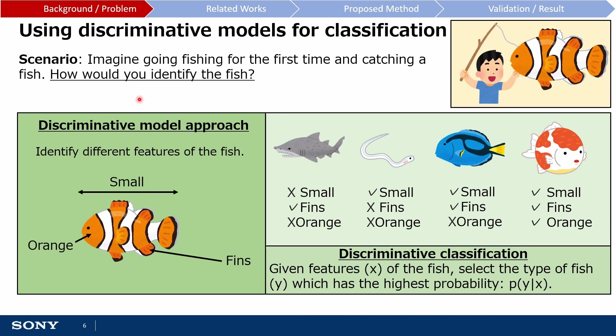Next, using those features, you can then check whether fish that you know about have those features or not. The fish that has the most similar features to the fish you caught is then your best guess for what the fish is. More formally, if we let x represent the features and y represent the different types of fish, discriminative classifiers model a conditional probability p(y|x) — in other words, the probability that the fish you caught is a particular fish, given the features that you have observed.